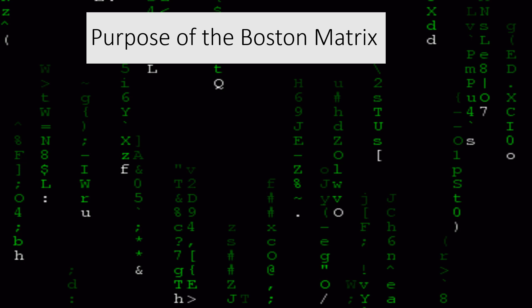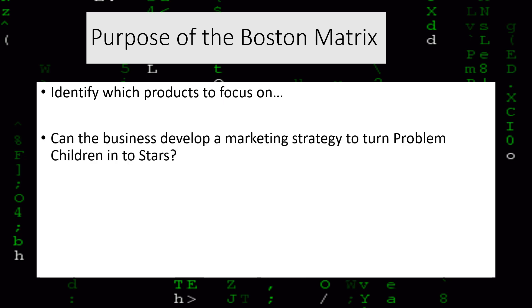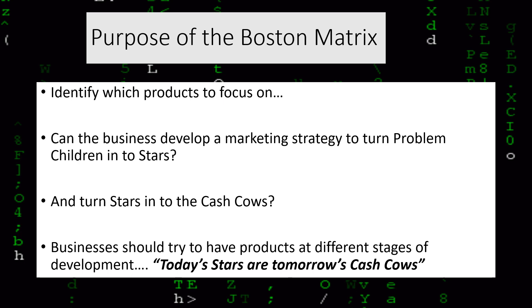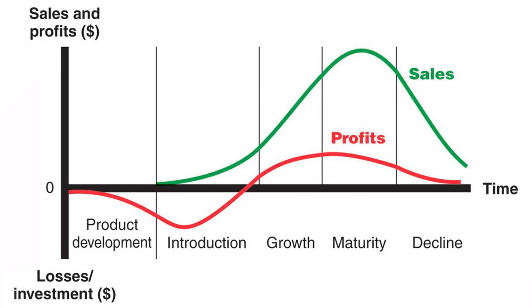The purpose of placing your products into the Boston Matrix is to identify which products to focus on. The first question is: can the business develop a corporate strategy to turn problem children into stars? The second question is: how do we retain our stars' high market share so they become cash cows? Businesses try to have products at different stages of development because today's stars are tomorrow's cash cows. We can evaluate the number of products within each stage and the strategies we can use to move them around the matrix.